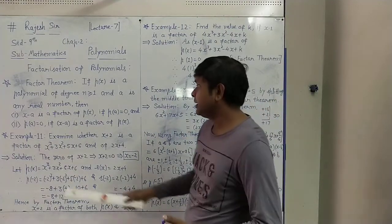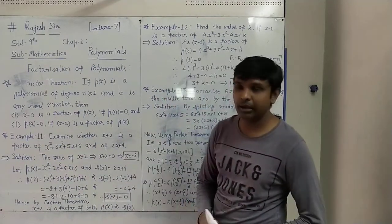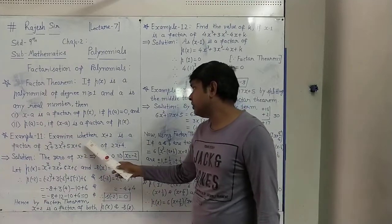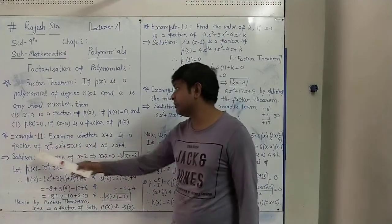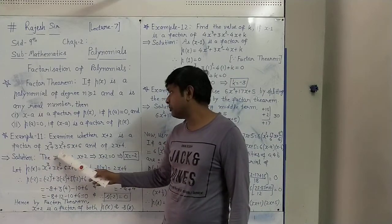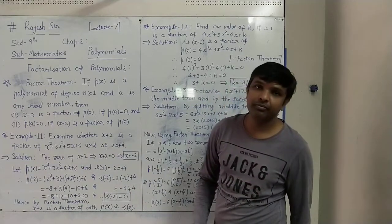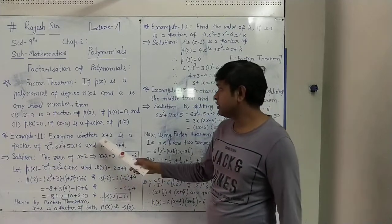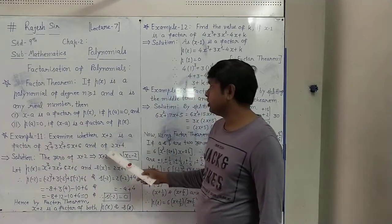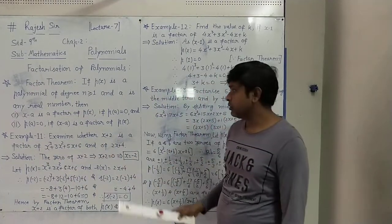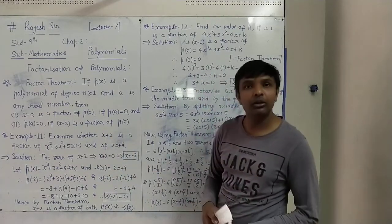Now we have Example 11. Using the Factor Theorem, examine whether x plus 2 is a factor of x cubed plus 3x squared plus 5x plus 6, and of 2x plus 4. So we have to check whether x plus 2 is a factor of this polynomial and this polynomial or not.